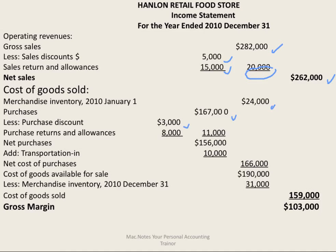The next section is cost of goods sold: beginning inventory, plus purchases, less purchase discounts and purchase returns, gives net purchases. Adding transportation in gives the net cost of purchases. Beginning inventory was $24,000; net cost of purchases is $166,000, so goods available for sale is $190,000. A year-end count of all inventory comes to $31,000, giving us the cost of goods sold.